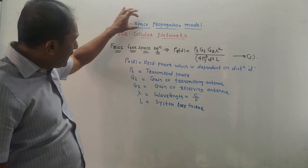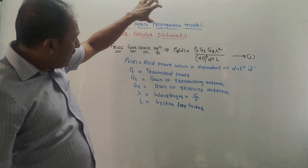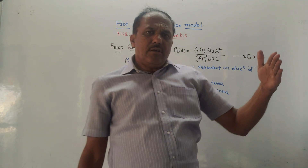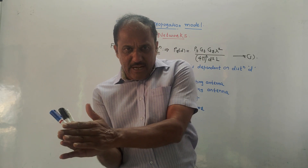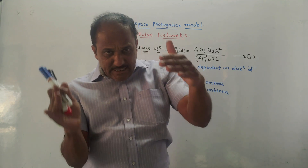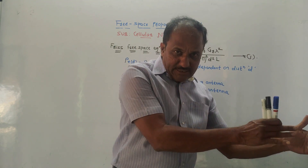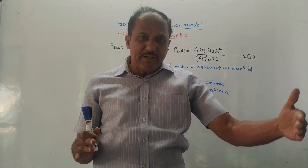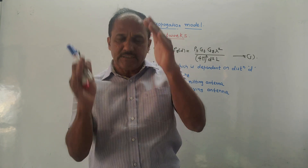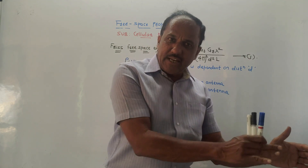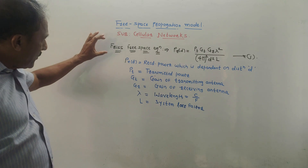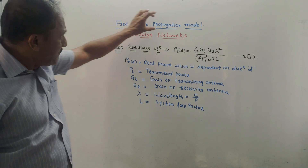The first part is the free space propagation model. Before starting, I would like to explain what a propagation model is. In normal communication there is a transmitting antenna at the transmitter side and a receiving antenna at the receiver side. Before the signal reaches the receiver side, there are many types of losses in between. Different mathematical models are designed to predict the number of losses taking place between the transmitting and receiving end. These models are known as propagation models, out of which one is the free space propagation model.